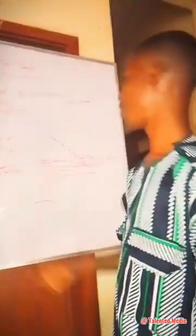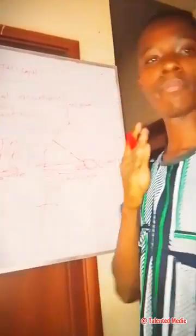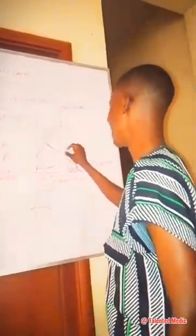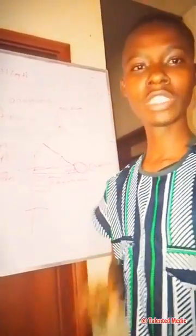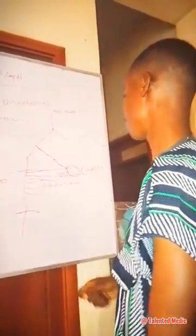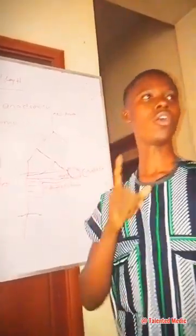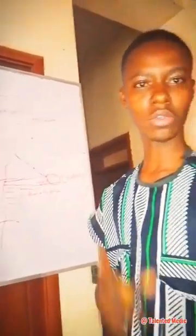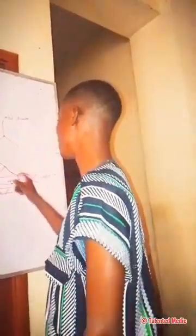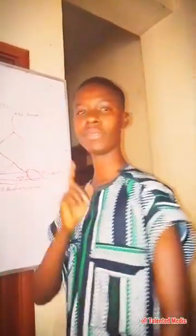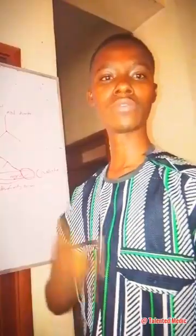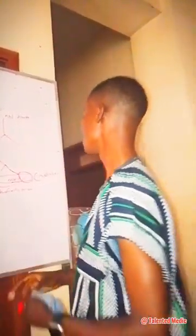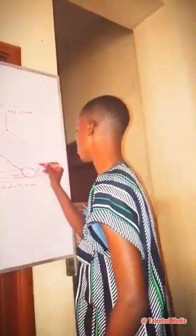The cruciate anastomosis is formed by four major structures: the descending of the inferior gluteal artery, the ascending of the first perforating branch of the profunda femoris artery, the transverse of the medial circumflex femoral artery, and the transverse of the lateral circumflex femoral artery.